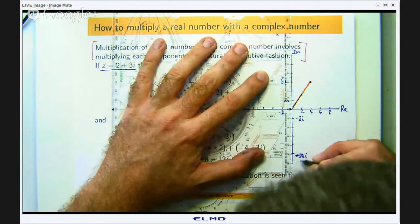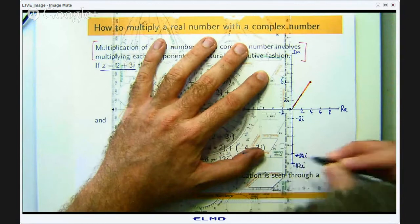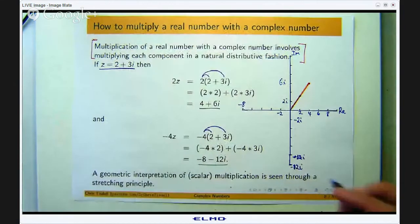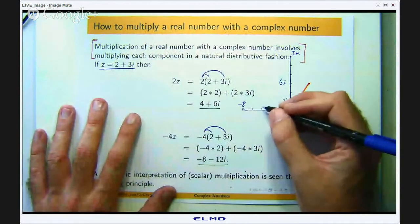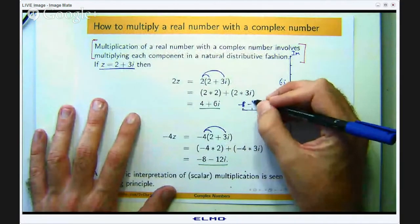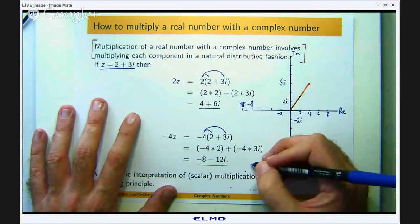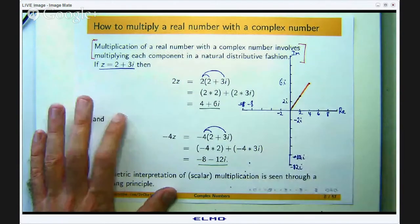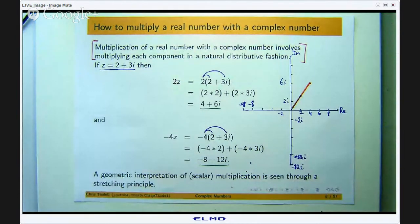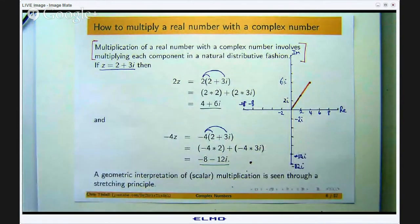So that is the negative 4z should be negative 12i now. So if I go out here and over to negative 8. So if I go out there.